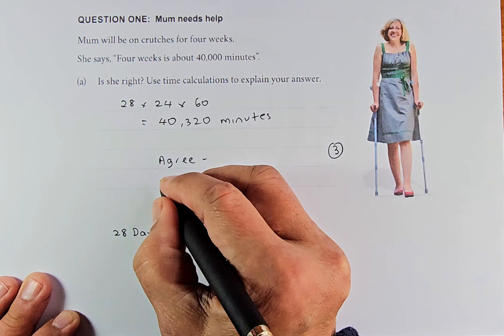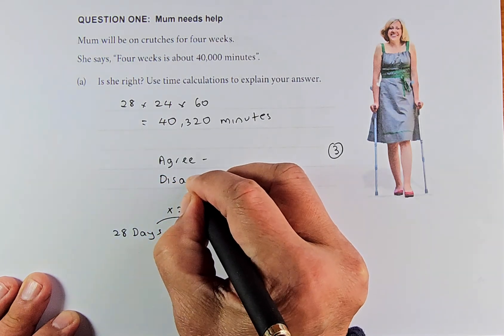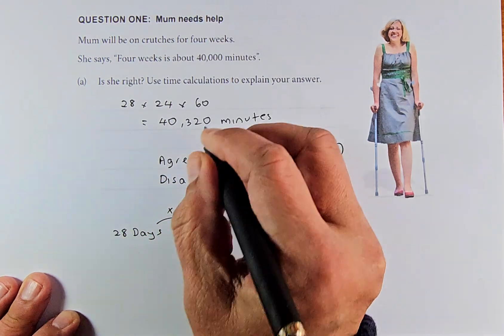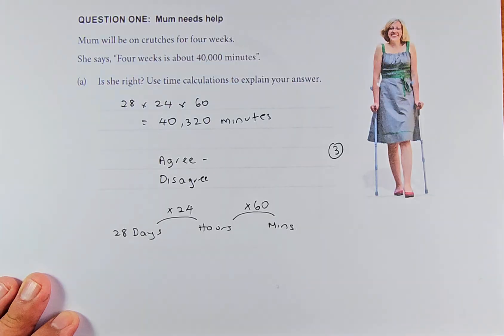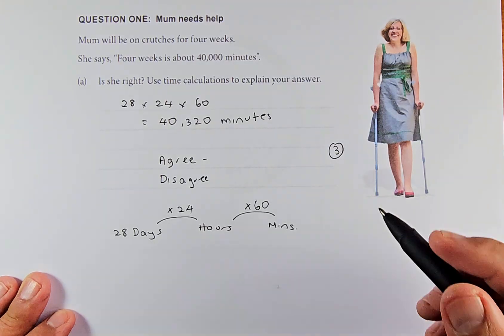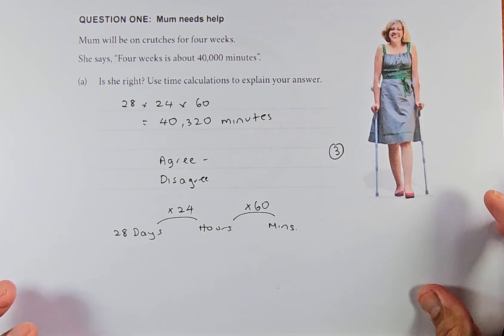On the other hand, if you disagree, you can say that 40,320 minutes is a bit more than 40,000, and you can disagree with the statement. Both are acceptable. If you can answer that, that is outcome three. Great. We shall do question 1b.